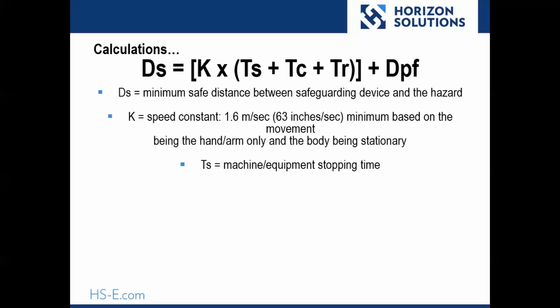TS is the total machine stopping time, where TC represents the control system stopping time or response time, and TR is the response time of the safeguarding device itself as well as any interface it may have.